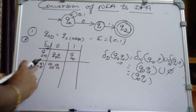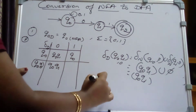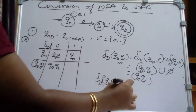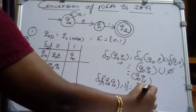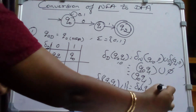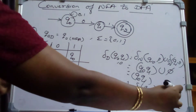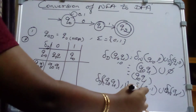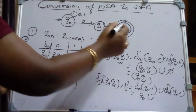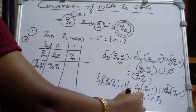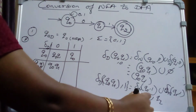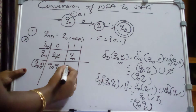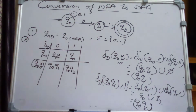Similarly, find δD({Q0, Q1}, 1). That equals δN(Q0, 1) union δN(Q1, 1). Q0 on 1 moves to Q0 itself. Q1 on 1 moves to Q2. So Q0 union Q2 gives us the new state {Q0, Q2}. Therefore, {Q0, Q1} on 1 moves to {Q0, Q2}. Add this new state {Q0, Q2} to the transition table and find its transitions on 0 and 1.